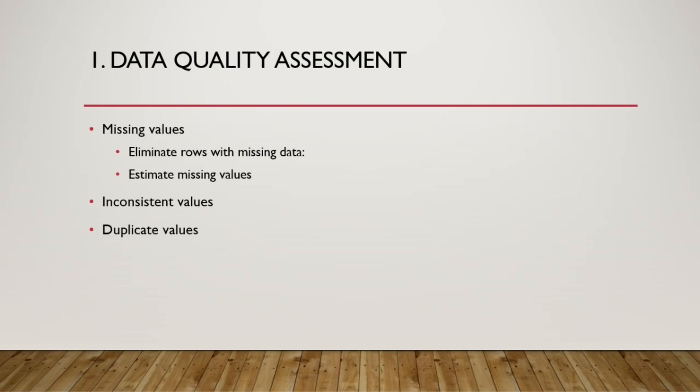Instead of eliminating missing data, we can calculate how many values are missing and, if the rest of the data is useful, fill the missing fields with a default constant value like zero, or with the mean or average of the existing values. These are the two broad ways to handle missing data, and we have already seen this in our EDA tutorials. Next comes inconsistent values, which occur mostly in string datatype fields.